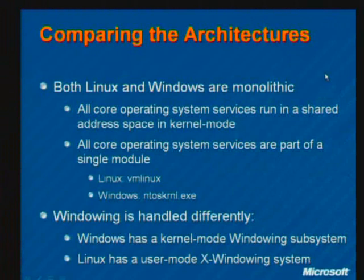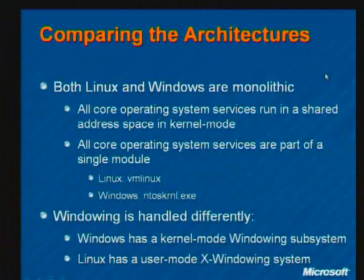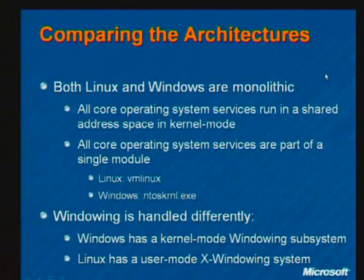Andrew Tanenbaum's MINIX operating system is a microkernel-based OS. In that kind of operating system, the kernel itself is very tiny and provides a very core set of services. Other subsystems you commonly think of as part of the kernel — like the memory manager and process manager — run in their own address spaces, looking a lot like user-mode programs. The idea behind a microkernel is that if one fails you can restart it, and nice interfaces make it easy to replace modules. The problem is performance, because communication requires message passing between address spaces.